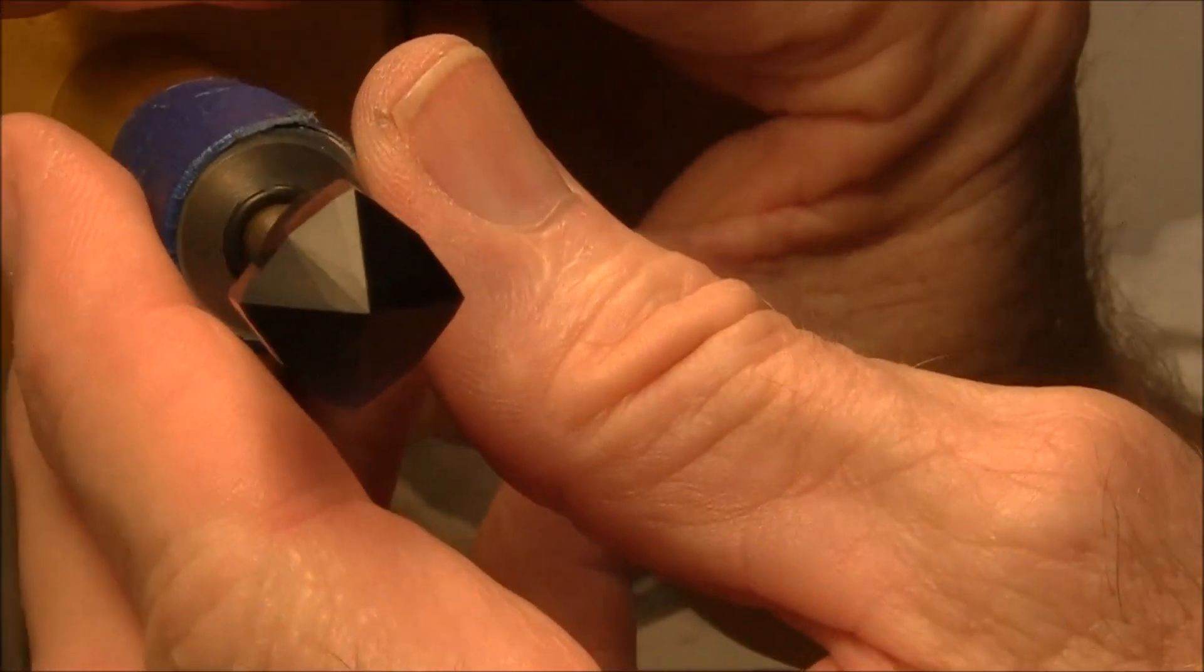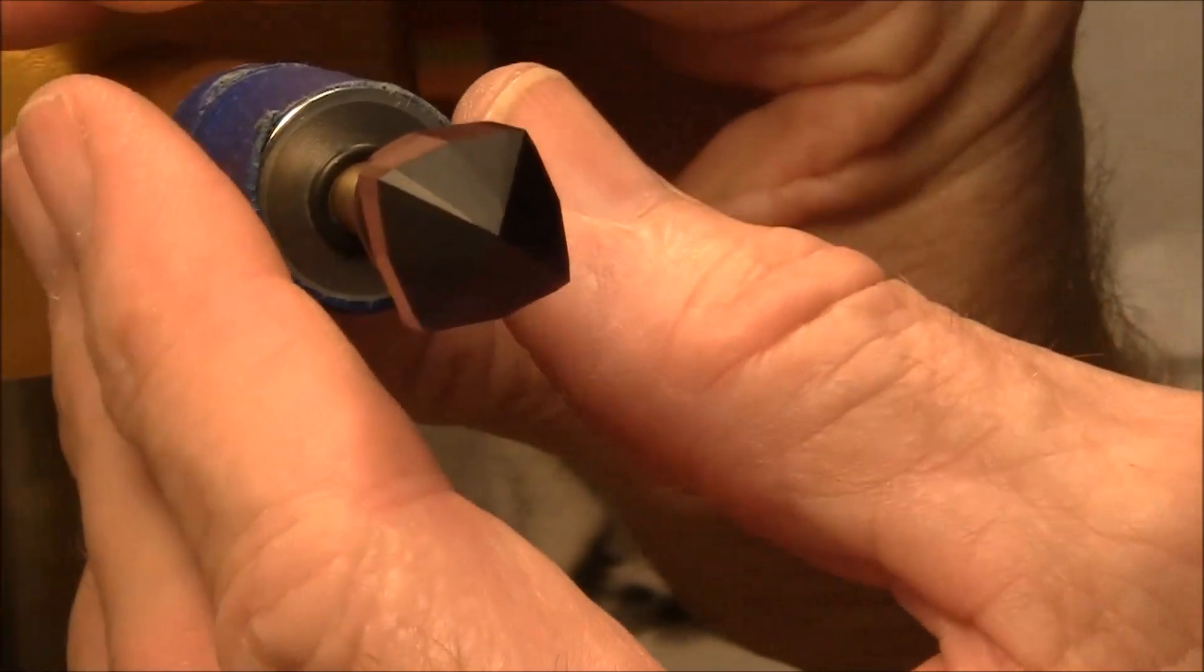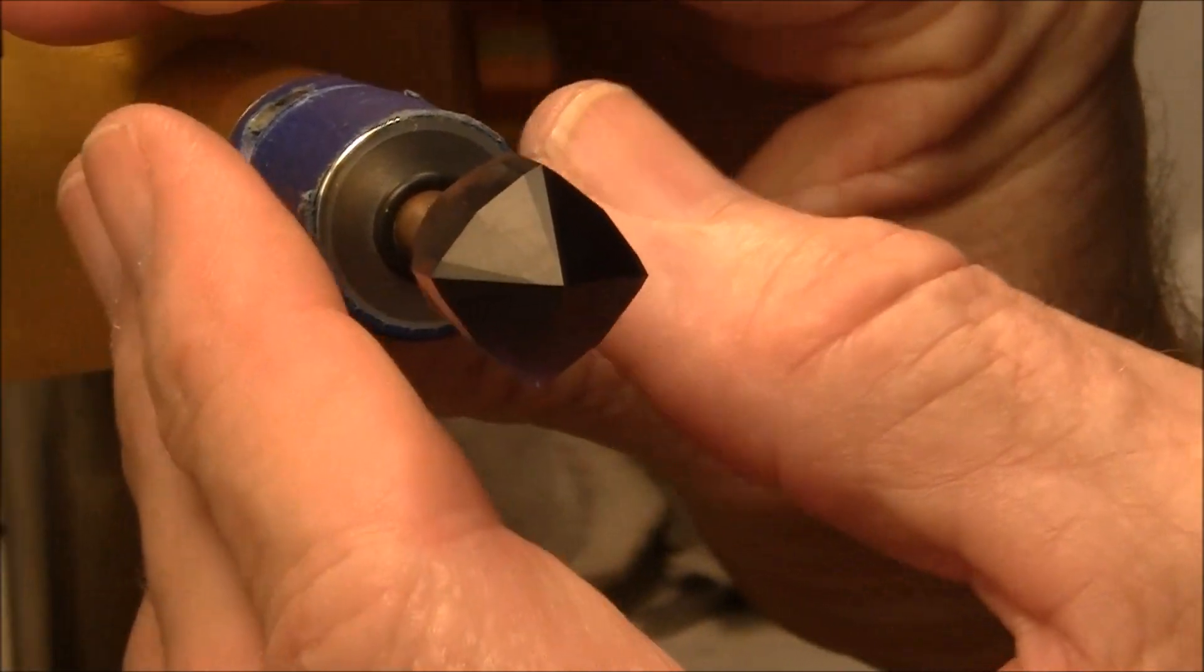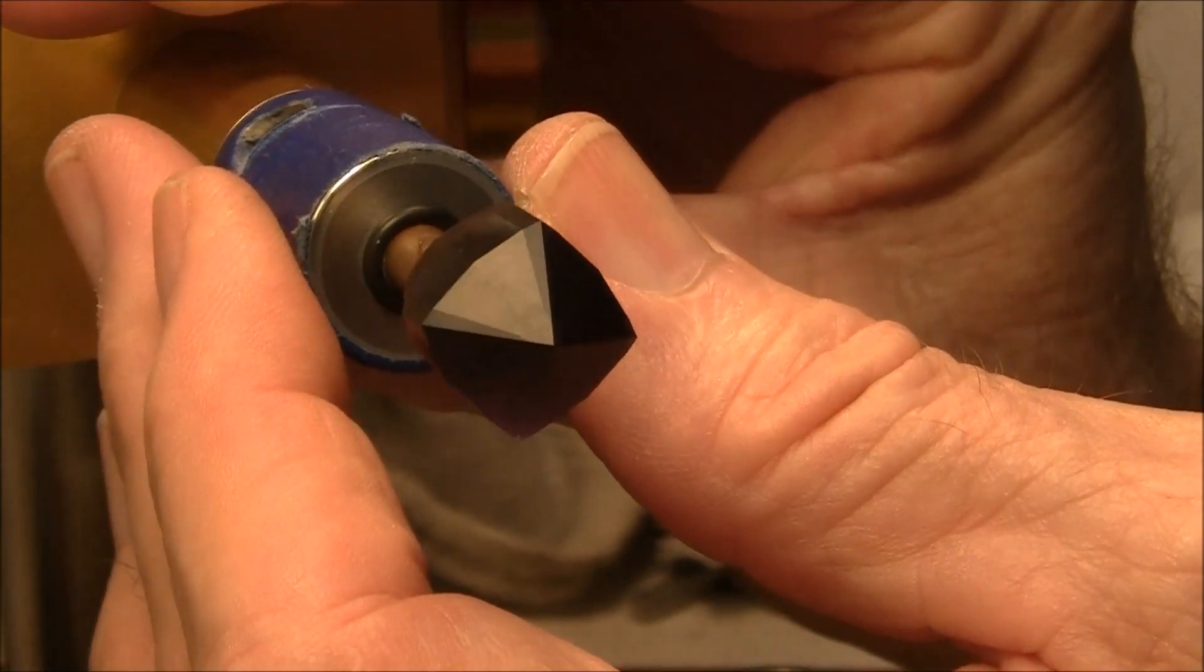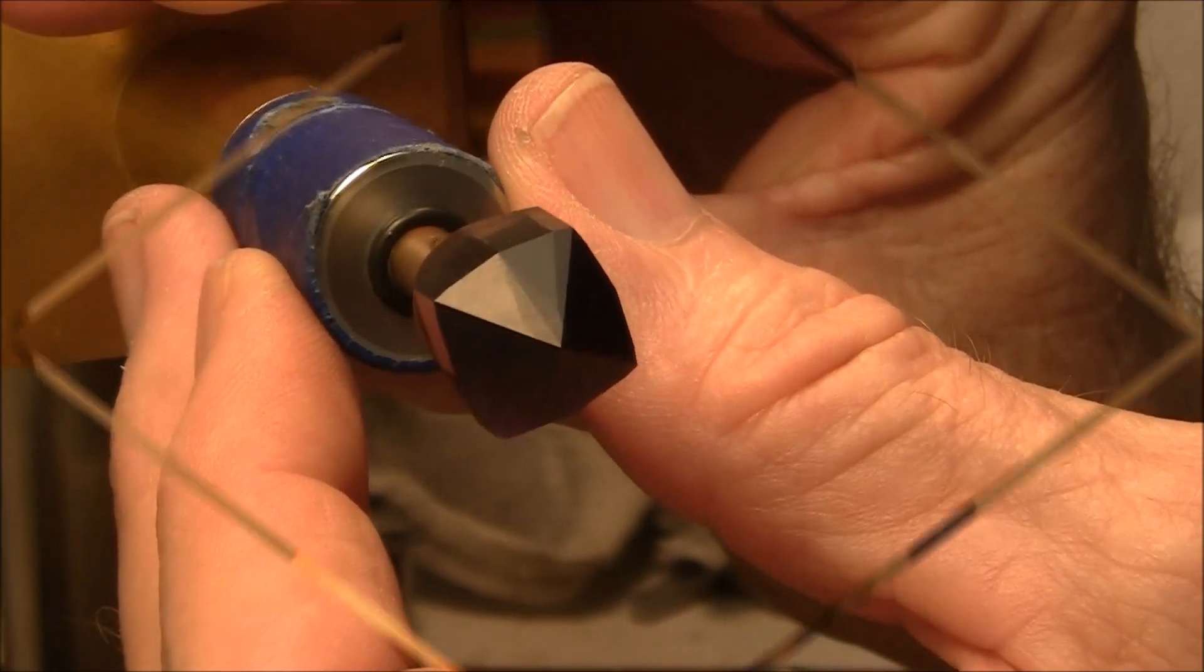At this point I've gotten all the pavilion facets pre-polished with 3000 grit diamond. And I used a zinc lap for that.